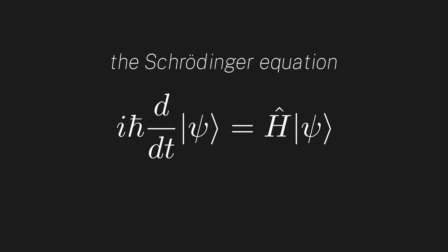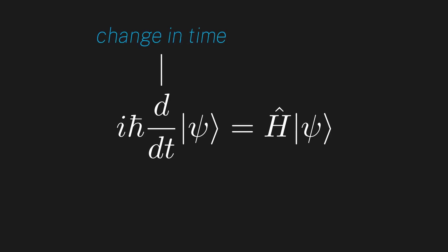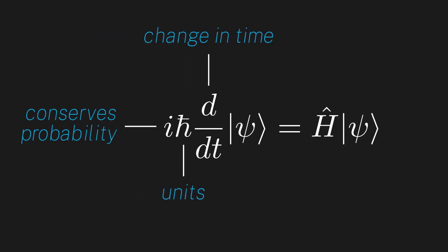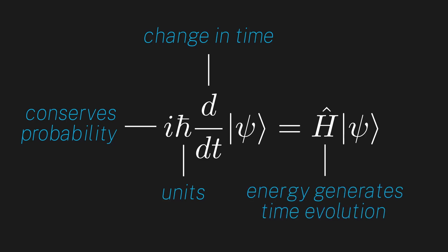Now that we've shown where it comes from, let's recap how we got each term. d/dt is the change in time of the quantum state. Planck's constant shows up because we need the units of both sides to match. Tracing back through the derivation, the i shows up because time evolution is unitary, which we derived mainly from probability conservation — so this i conserves probability. Many people wonder why quantum mechanics needs imaginary numbers: it's to conserve probability. Lastly, the Hamiltonian shows up because classical physics tells us that energy generates time evolution. Now you know what each piece of the Schrödinger equation is and where it comes from.